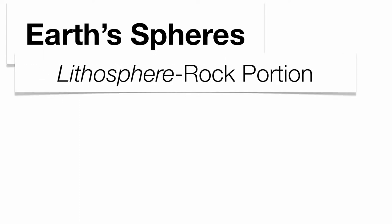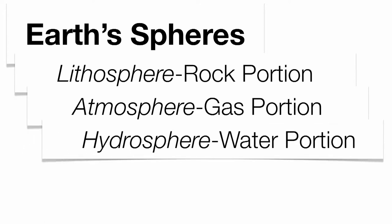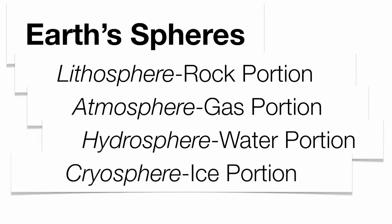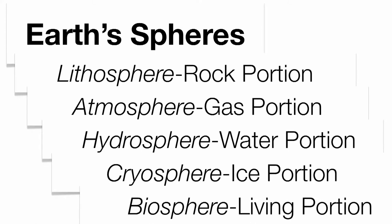The Earth is quite complex. It has multiple layers and multiple sections that interact with each other on a constant basis — that's what we call Earth's spheres. The rock portion is called the lithosphere, the gas portion is the atmosphere, the water portion is the hydrosphere, the ice portion is the cryosphere, and the living portion is what we call the biosphere. Those spheres are constantly interacting with each other each and every day.